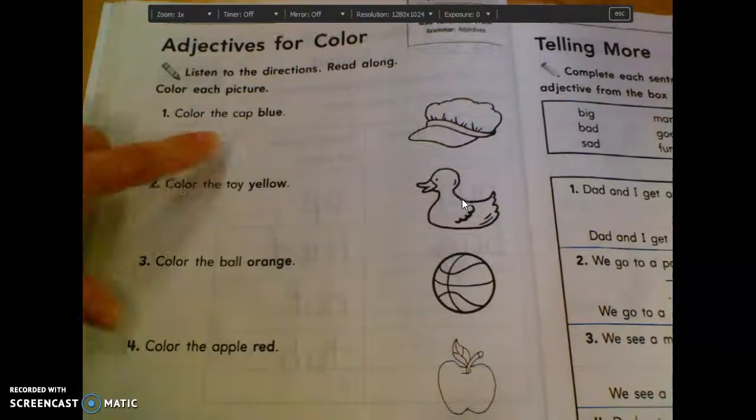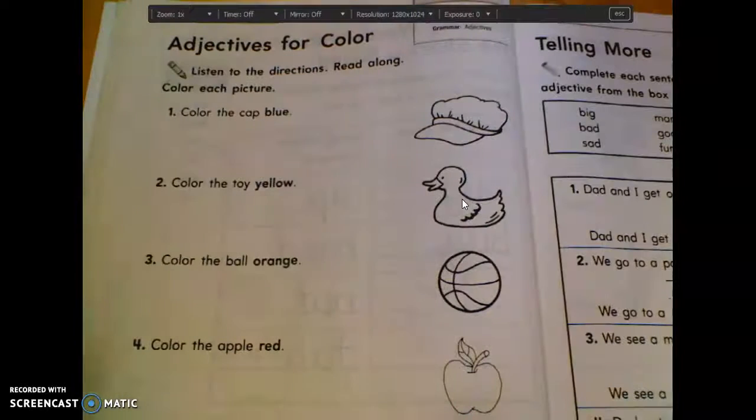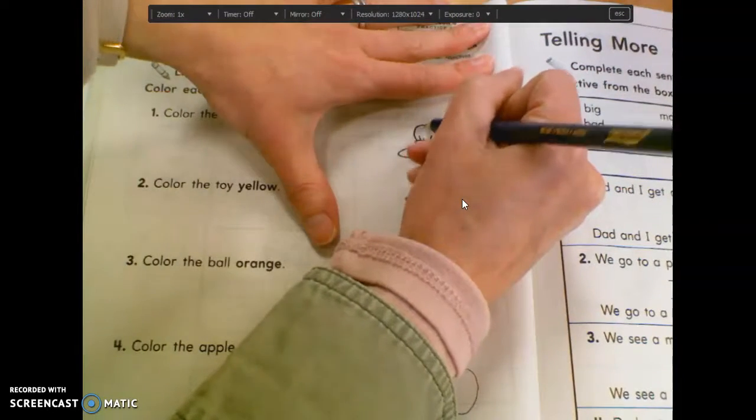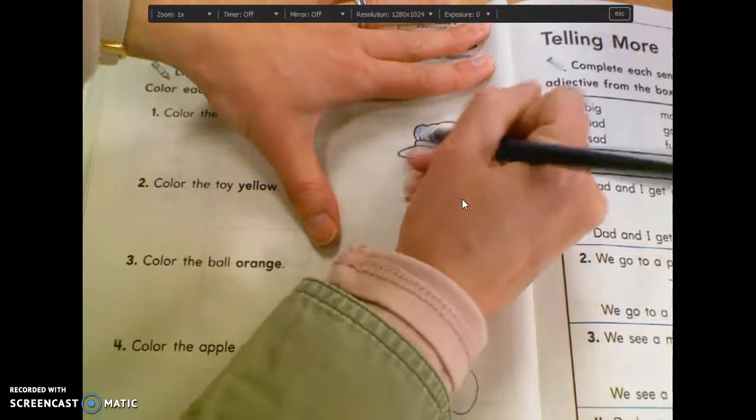So number one just says to color the cap blue. So remember, these are all adjectives. Color words are adjectives. So when you say something is blue or black or orange or green or white, that is an adjective. So the first one, you're just going to color the cap blue. Look it out for blue, and you're going to color it.